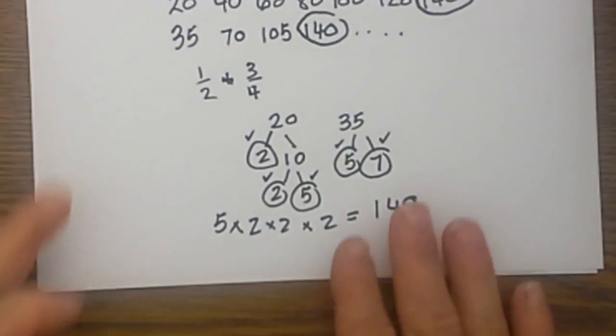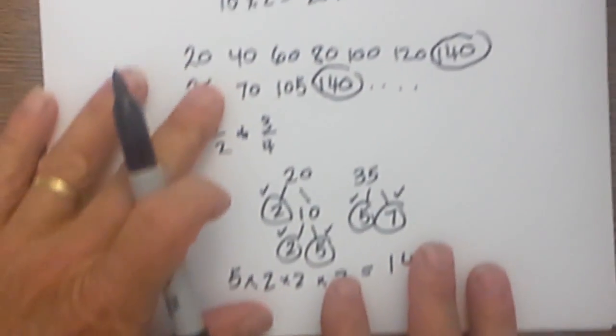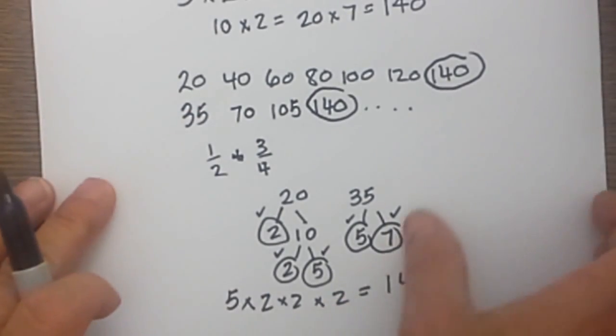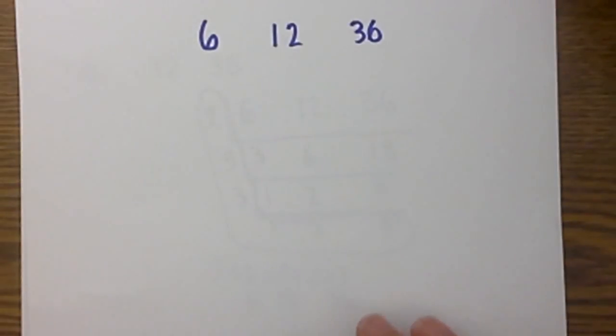So again you have three techniques. You have the ladder, the traditional factoring, and prime factorization tree. Now let's go ahead and look at three numbers.